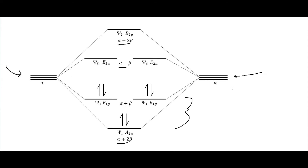Benzene is a six-membered ring, often drawn with three pi bonds. Those three pi bonds come from these three filled bonding pi molecular orbitals. These electrons are shared around the whole ring, which is why benzene is also drawn with a circle in the middle — the electrons are delocalized around the entire ring. These are the molecular orbitals for the pi bonds on our aromatic benzene ring.